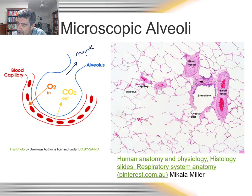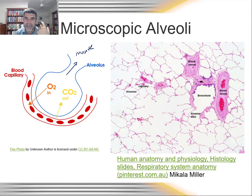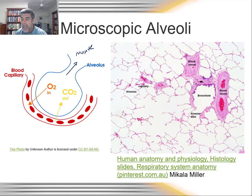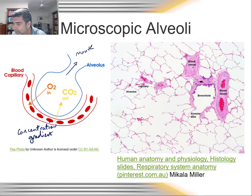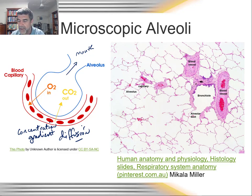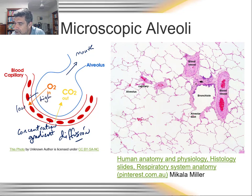Air is inhaled and exhaled through a series of structures including the bronchioles, bronchus, trachea, and up into the mouth and nose. Gases come in and out through inhalation and exhalation, and there's a concentration gradient that allows for diffusion — the movement of materials from areas of high concentration to areas of low concentration. The blood passing past the alveoli tends to be low in oxygen, so oxygen diffuses from the alveolus into the blood system.